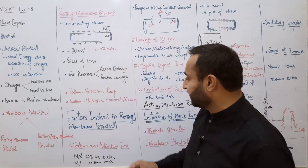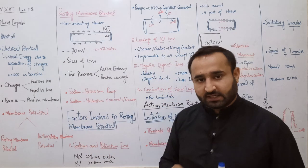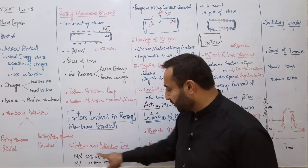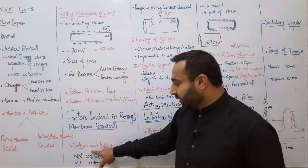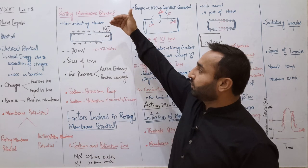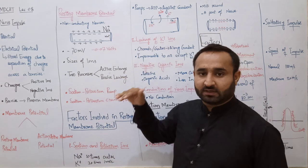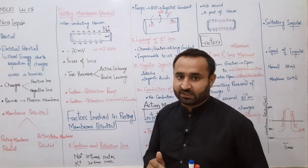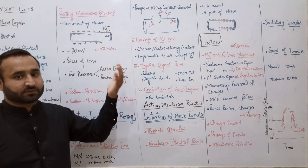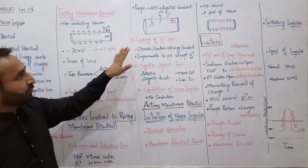Factors involved in resting membrane potential - بڑا important topic ہے۔ First of all sodium and potassium ions: sodium ions membrane کے outer region میں inner کی نسبت 10 times greater ہوتے ہیں۔ Potassium ions inner side پہ outer کی نسبت 20 times greater ہوتے ہیں۔ اس لیے باہر زیادہ positive اور اندر زیادہ negative charge ہوتا ہے۔